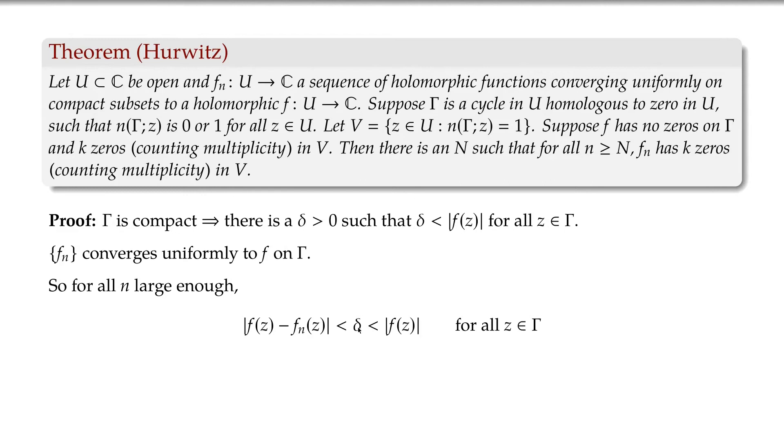But we know already that delta is a lower bound for the modulus of F on gamma. So we have this inequality. If you forget about the delta in the middle, that's precisely the inequality that we get in Rouché. Okay, and Rouché now says that F and F_N have the same number of zeros in V. It was exactly this sort of V in Rouché's theorem. Okay, so that's the proof.